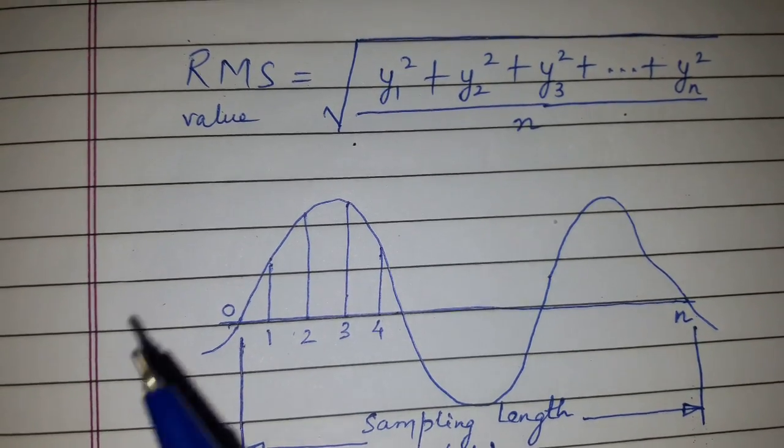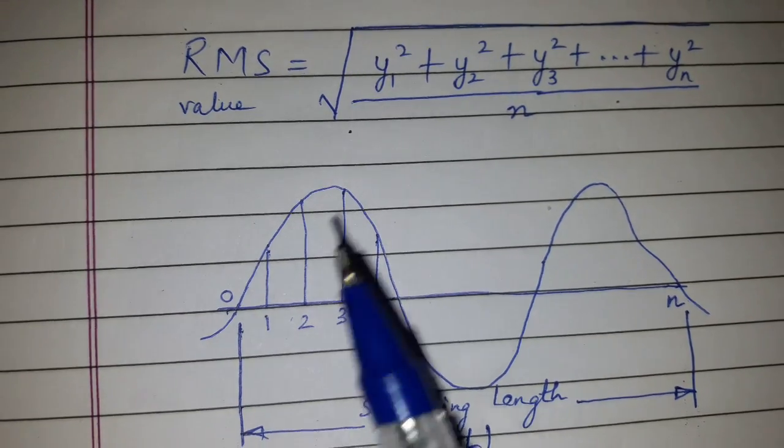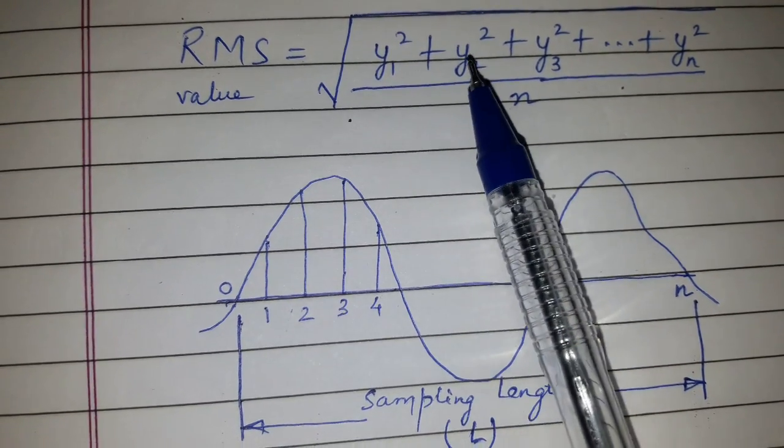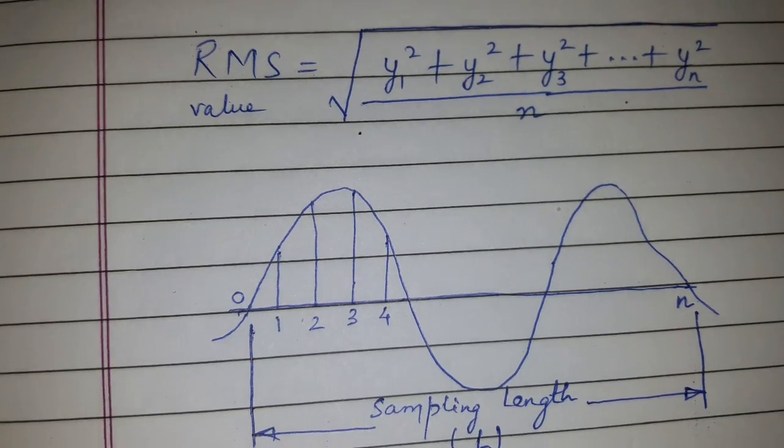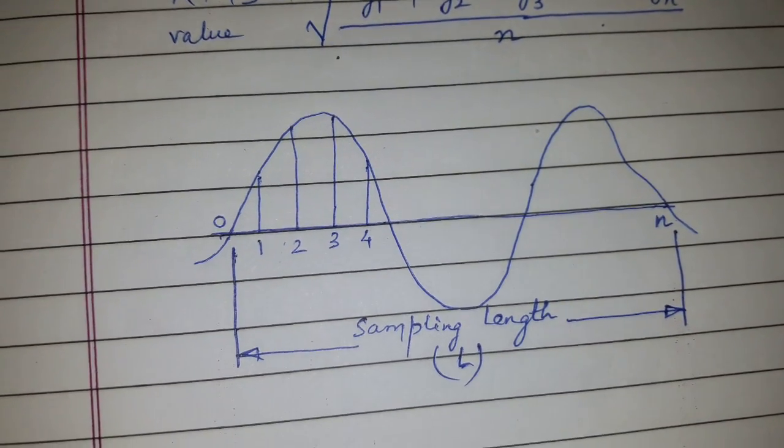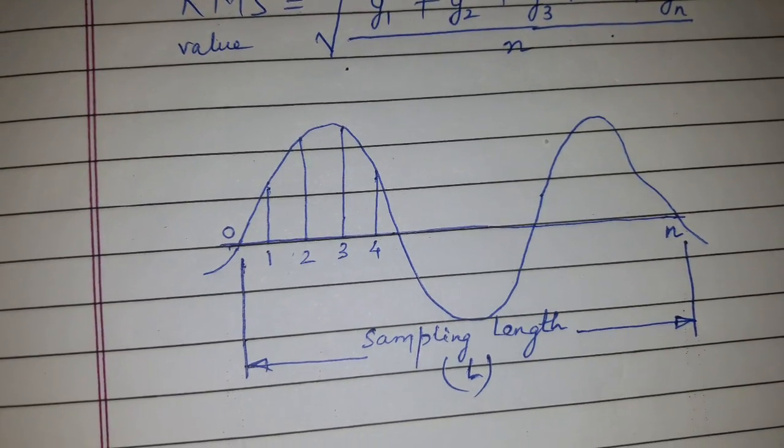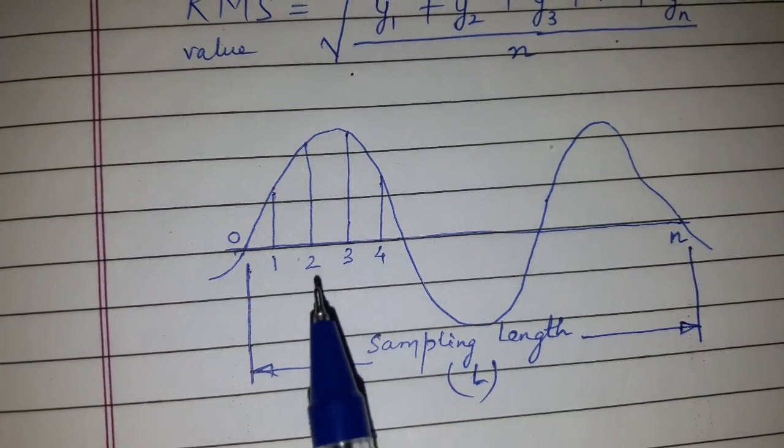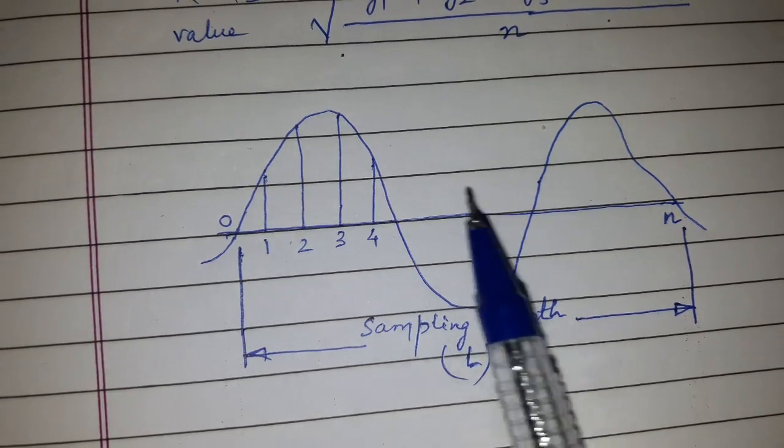So RMS value is square root of arithmetic mean of square of ordinates. If we have taken the sampling length as L which is divided into n equal parts, and the ordinate heights are y1, y2, y3, up to yn...